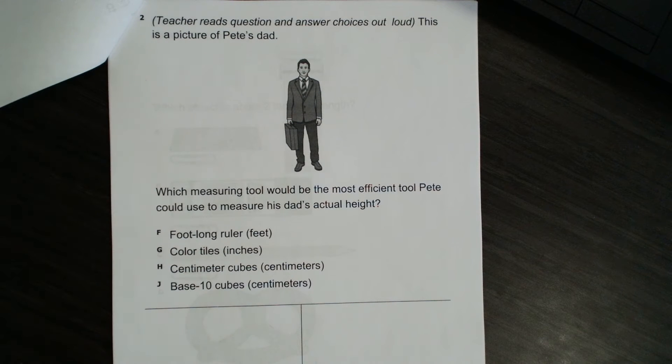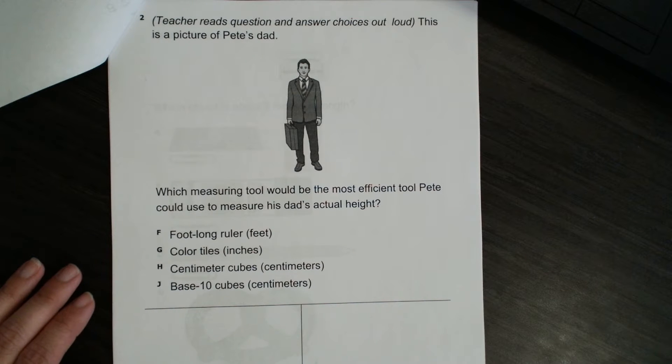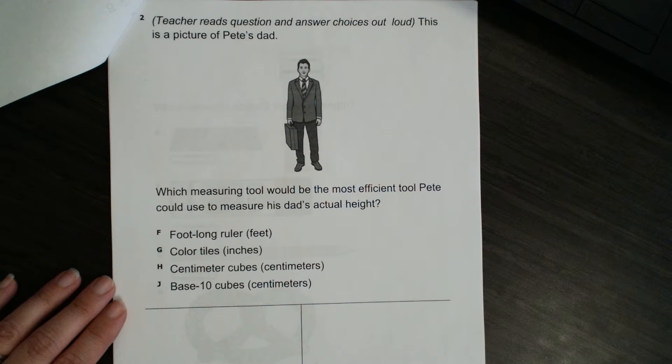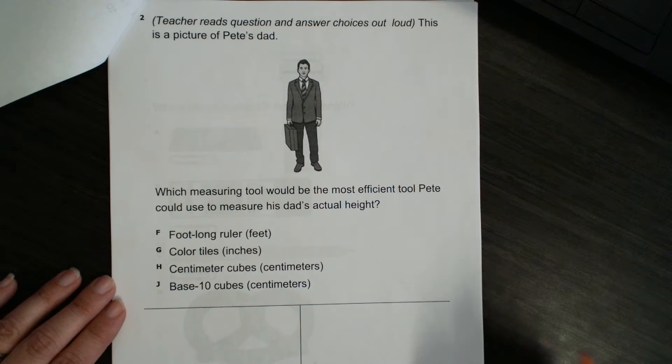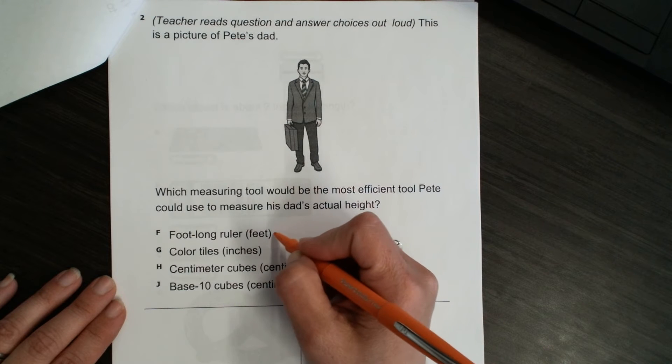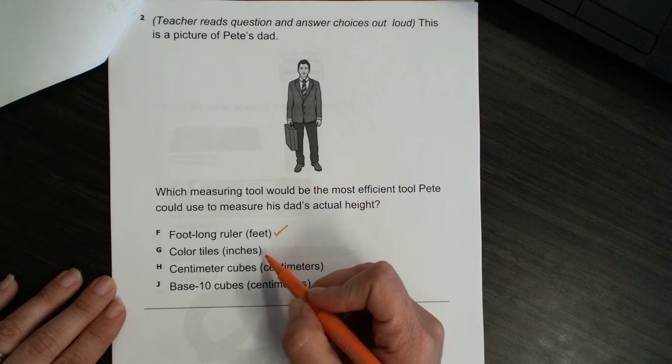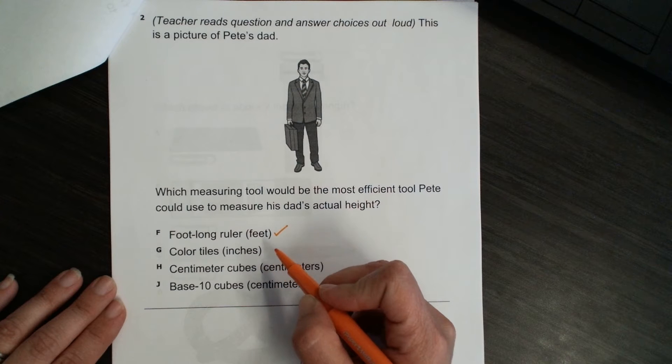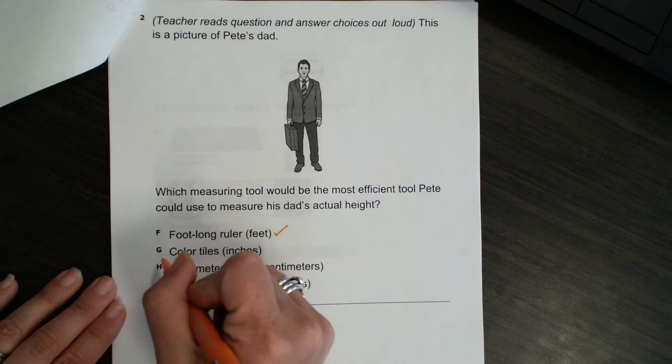Number two. This is a picture of Pete's dad. Which measuring tool would be the most efficient tool Pete could use to measure his dad's actual height? A foot-long ruler measuring his dad in feet? I think maybe so. I'm going to put a check. How about color tiles that are inches, one inch long each? No, that would be a lot of inches tall for Pete's dad.